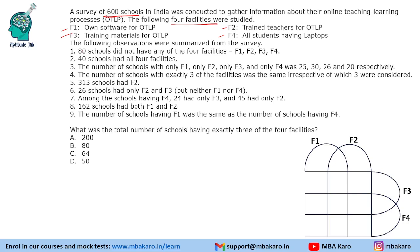It says 80 schools did not have any of the 4 facilities, so outside the Venn diagram we will place the number 80. Then, 40 schools had all 4 facilities, so the center region representing all four is 40.